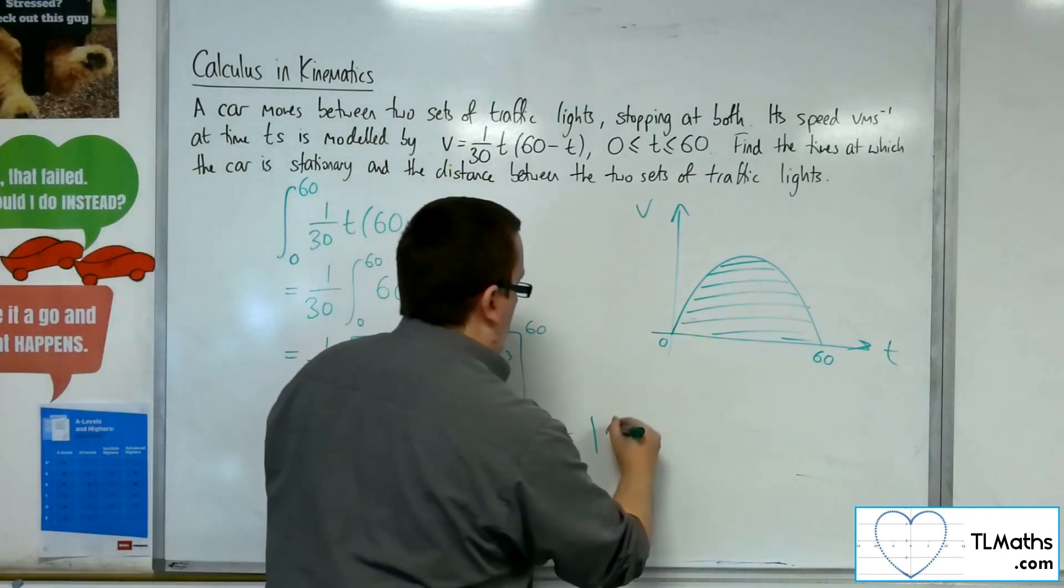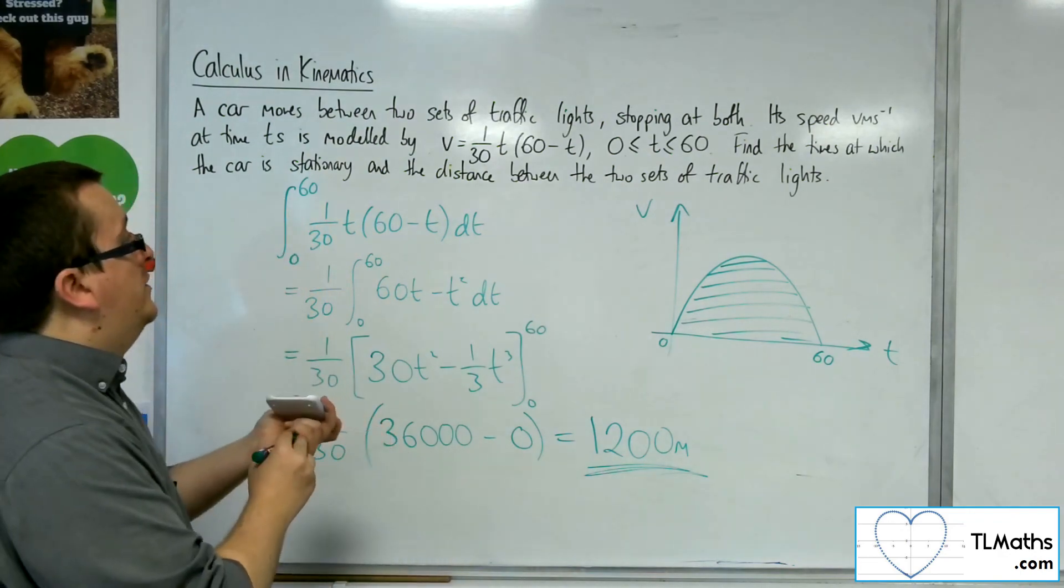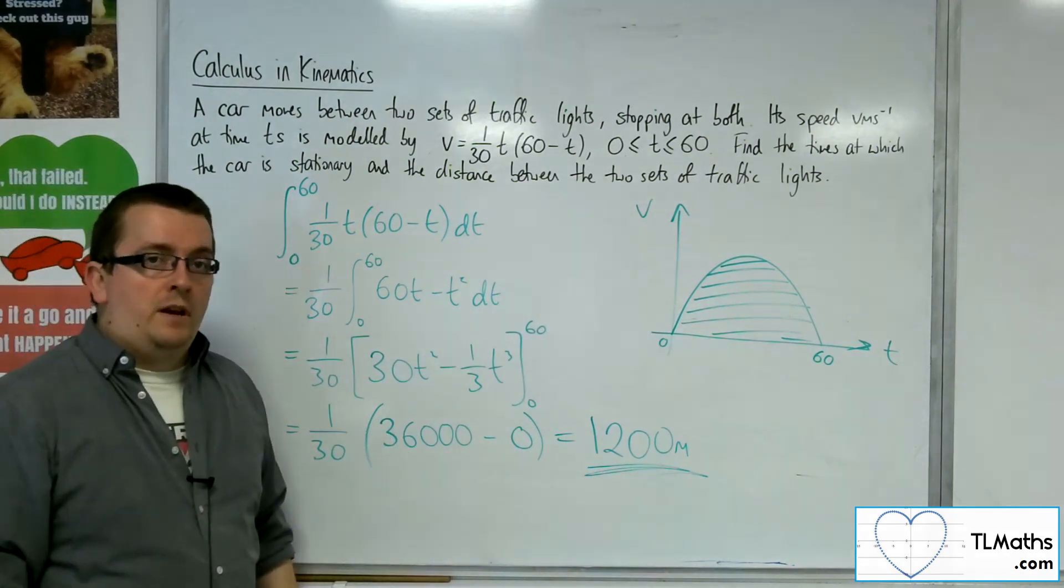So divide that by 30, and I get 1,200, and that's metres. That is the distance that is travelled by the car between the two sets of traffic lights.